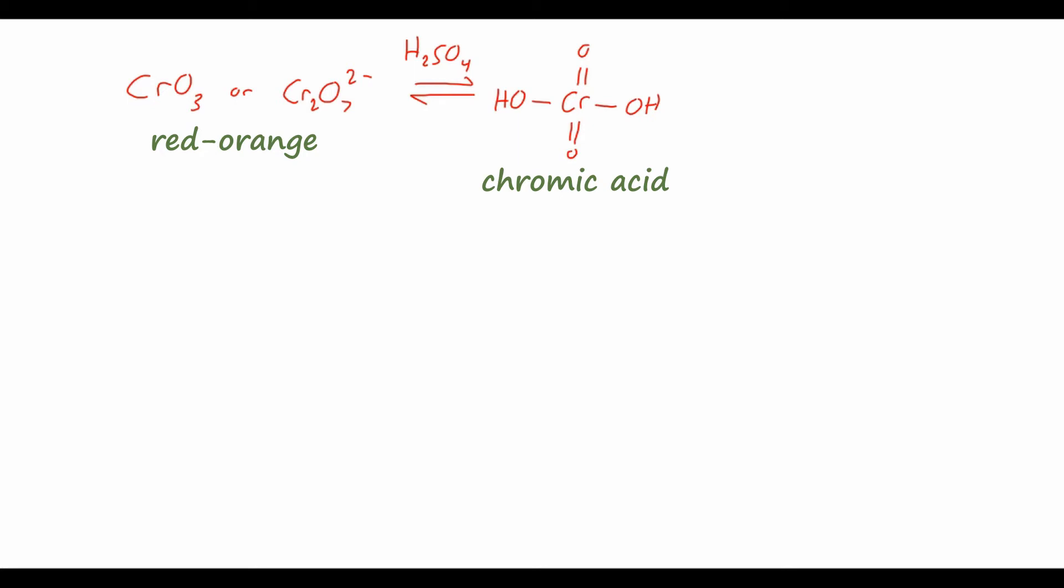And in your reaction vessel, the chromic acid and alcohol are in equilibrium with what we call a chromate ester, which is this compound, where we have the R and R prime groups again from the alcohol, and the oxygen here, but now the oxygen is also bonded to that chromium from the chromic acid.